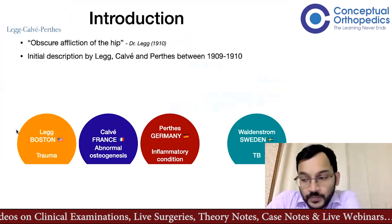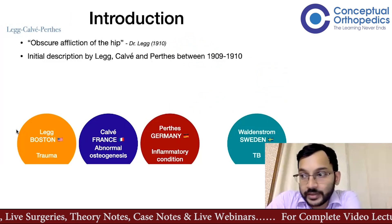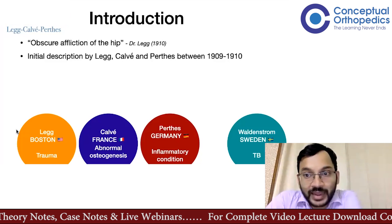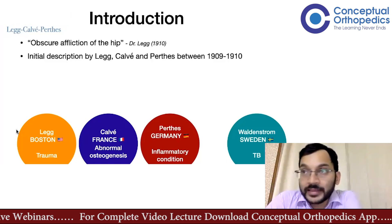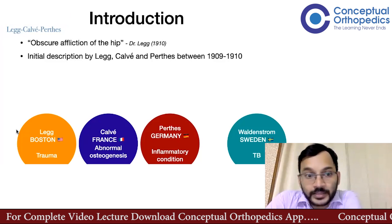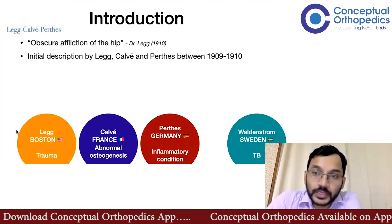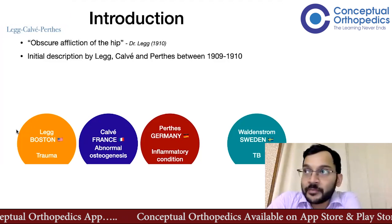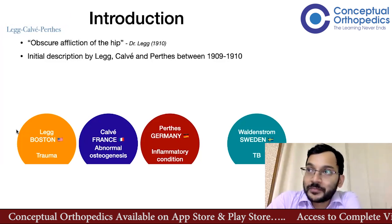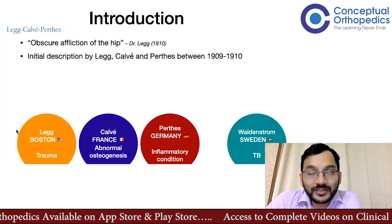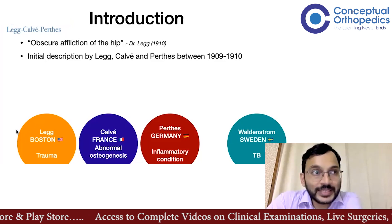Perthes disease, or Legg-Calvé-Perthes disease, was initially described in 1909 and 1910 in different papers simultaneously in three different areas: by Dr. Legg in Boston, USA; by Calvé in France; and by Perthes in Germany. Back in the day without modern communication, all three describing it at the same time makes it logical that the disease is named after all three of them.